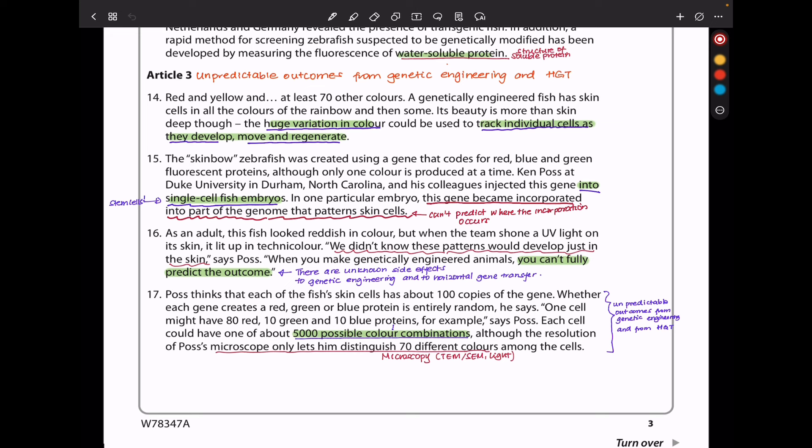We didn't know these proteins would evolve just in the skin, says Poss. When you make genetically engineered animals, you can't fully predict the outcome. Poss thinks that each of the fish skin cells has about 100 copies of the gene. Whether each gene creates a red, green or blue protein is entirely random, he says. One cell might have 80 red, 10 green and 10 blue proteins, for example, says Poss. Each cell could have one of about 5,000 possible color combinations, although the resolution of Poss's microscope only lets him distinguish 70 different colors among the cells.